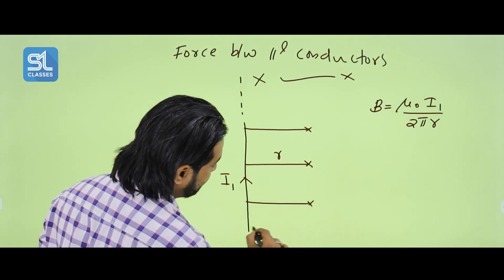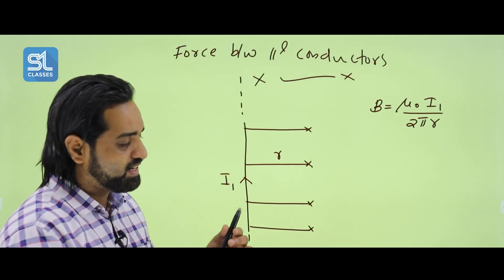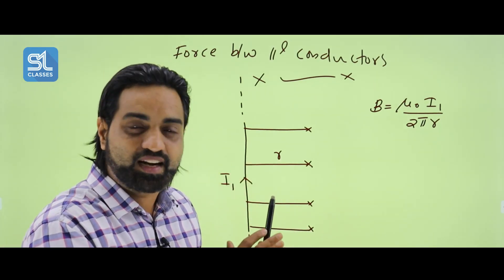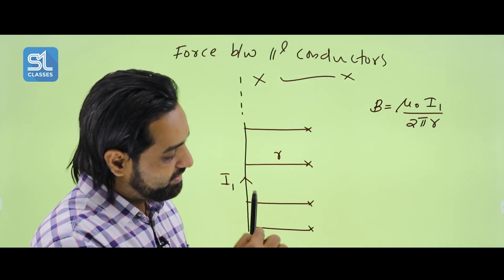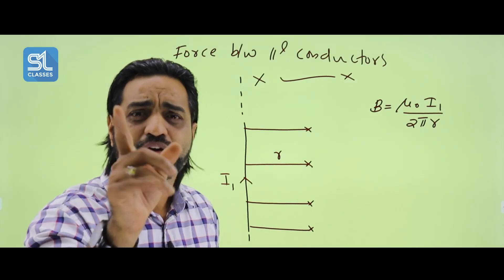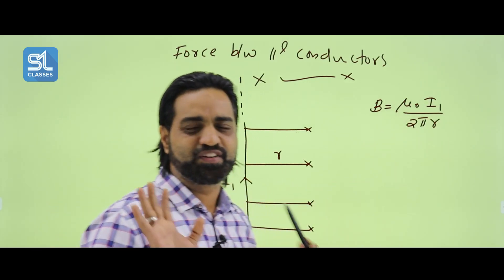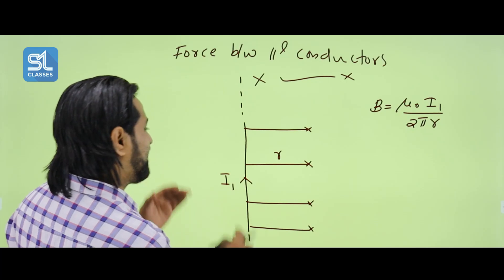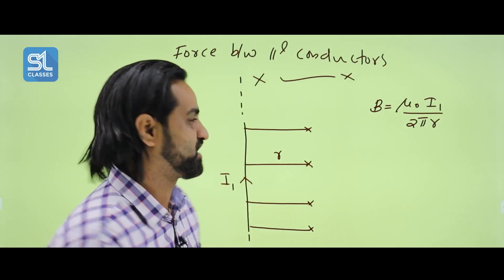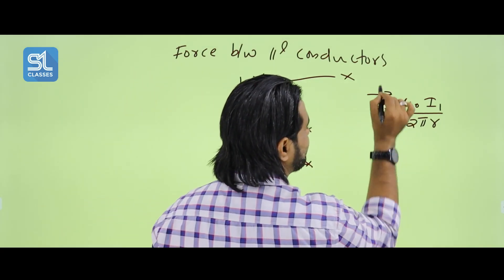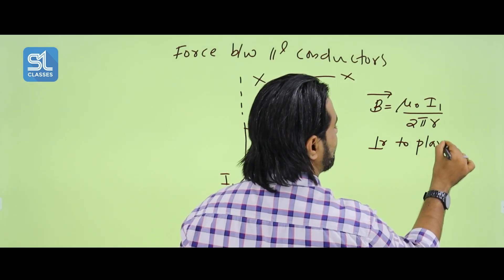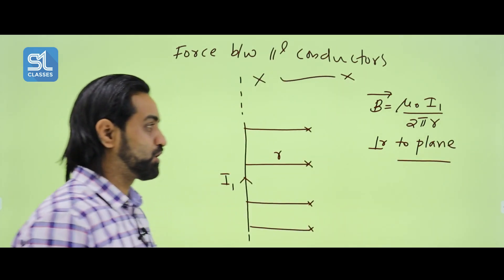Here is a distance R. The magnetic field is perpendicular to the plane. This direction is perpendicular to the plane. The plane is this board.